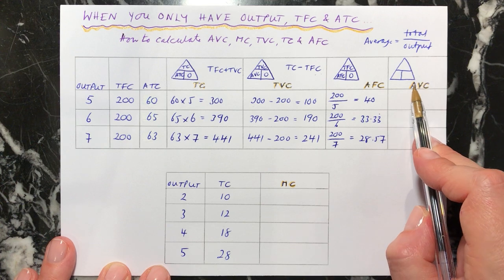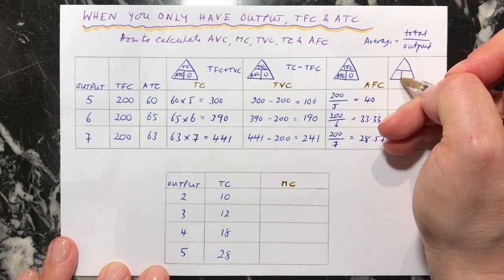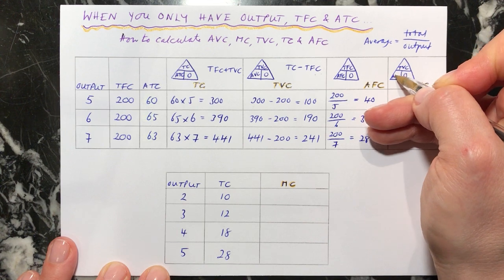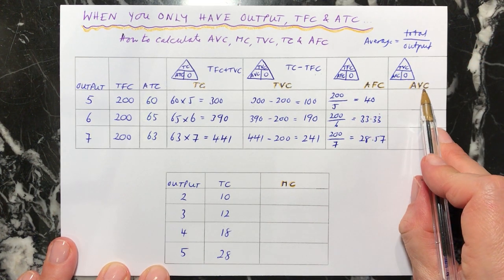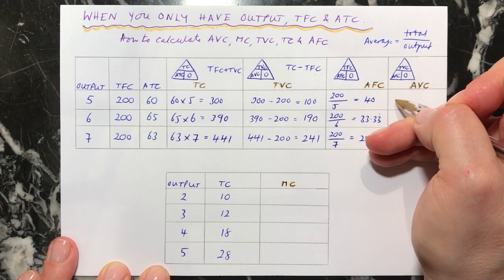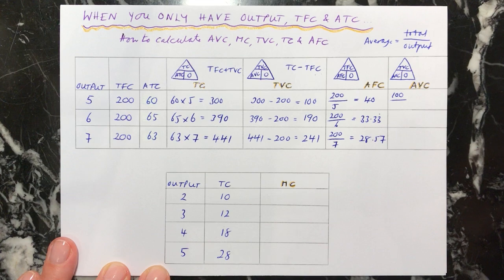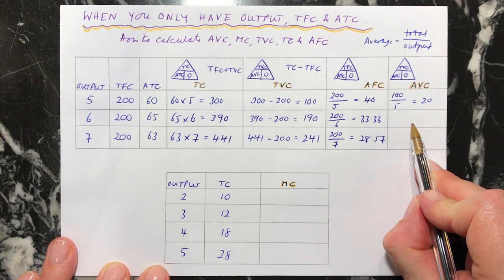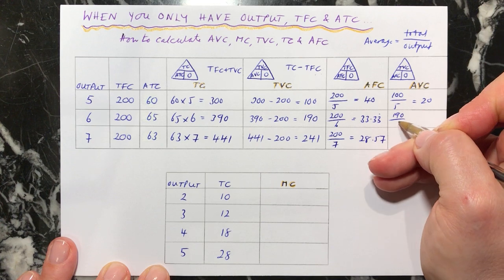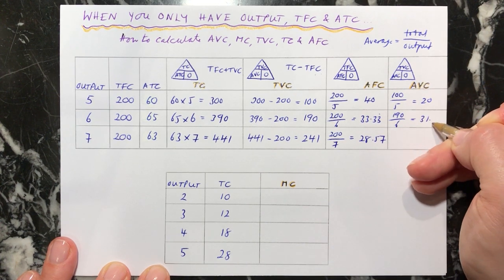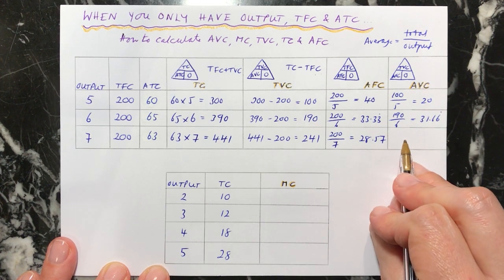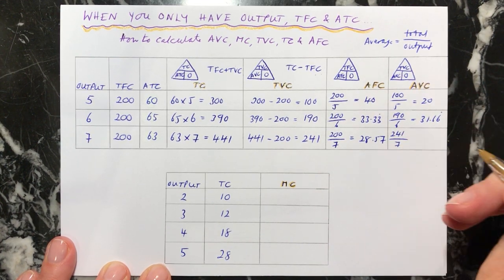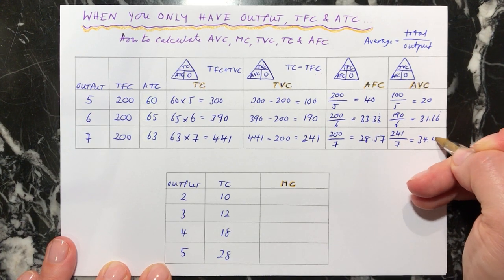The final one is average variable cost. Again, you need your total variable cost divided by your output to give you your average variable cost. So for the first one, total variable cost is 100 divided by output of 5, which gives us 20. The next one: 190 divided by output of 6 equals 31.67 recurring. And the last one: total variable cost 241 divided by output of 7 gives us 34.43.